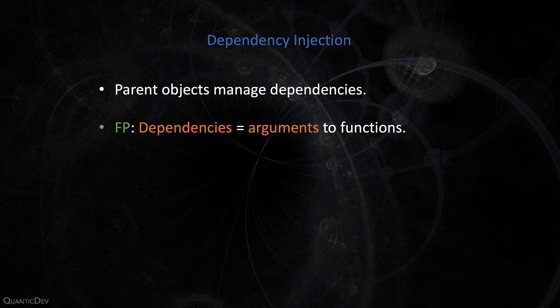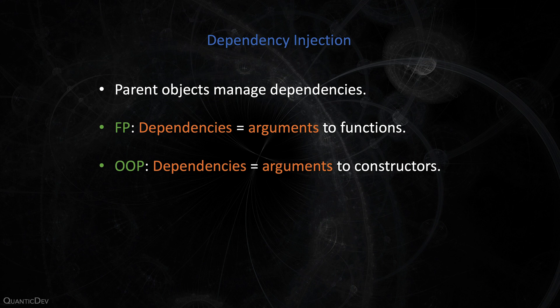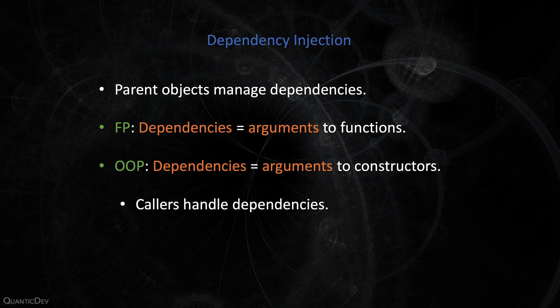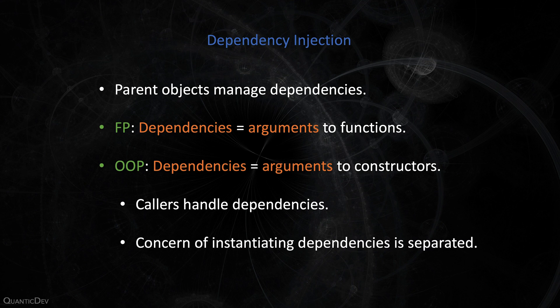In object-oriented programming terms, instead of creating instances of external objects in your class's constructor method, accept them as arguments to your constructor. This achieves several things. First, you will not have to deal with the initialization details of all the other objects that you depend on — whatever is initializing your class through your constructor will have to satisfy all the required dependencies. Second, this ensures that the concern of initiating objects is separated from the users of them.